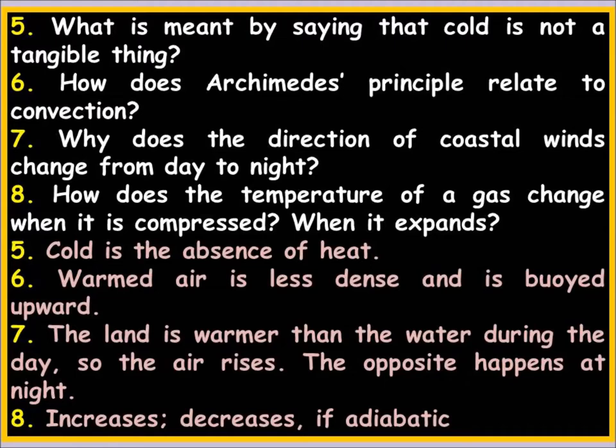How does Archimedes' principle relate to convection? It has to do with changes in density — warmed air is less dense and is buoyed upward. Anything with differences in densities or pressure relates to Archimedes' principle. Why does the direction of coastal winds change from night to day? Because the land is warmer than the water during the day, so the air rises. The opposite happens at night.